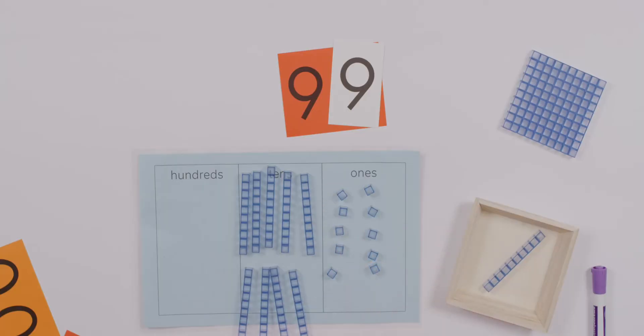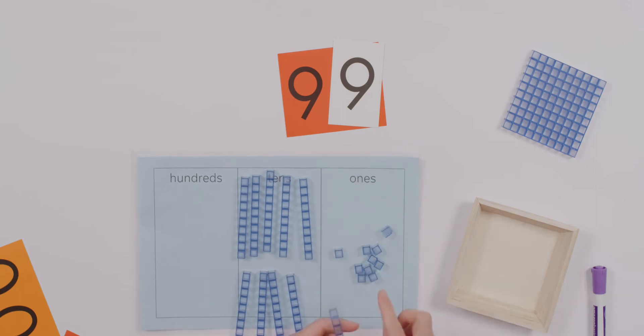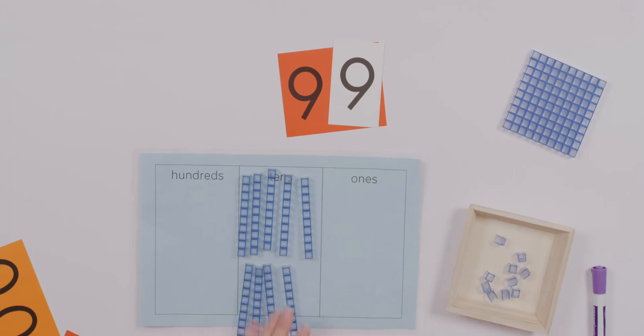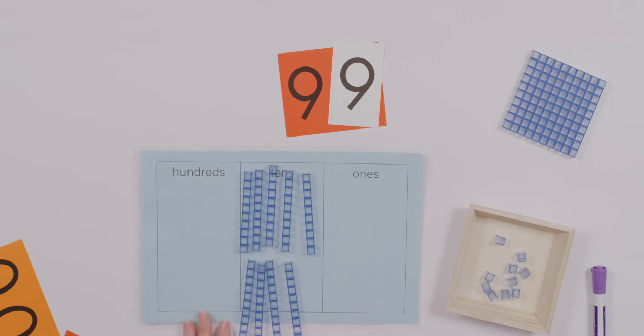My goodness, I don't think we can have all those tens in that column, can we? Oh okay, you've got the solution. We're gonna exchange these ten ones for 1 ten. Ah, emergency averted, we're gonna be just fine.